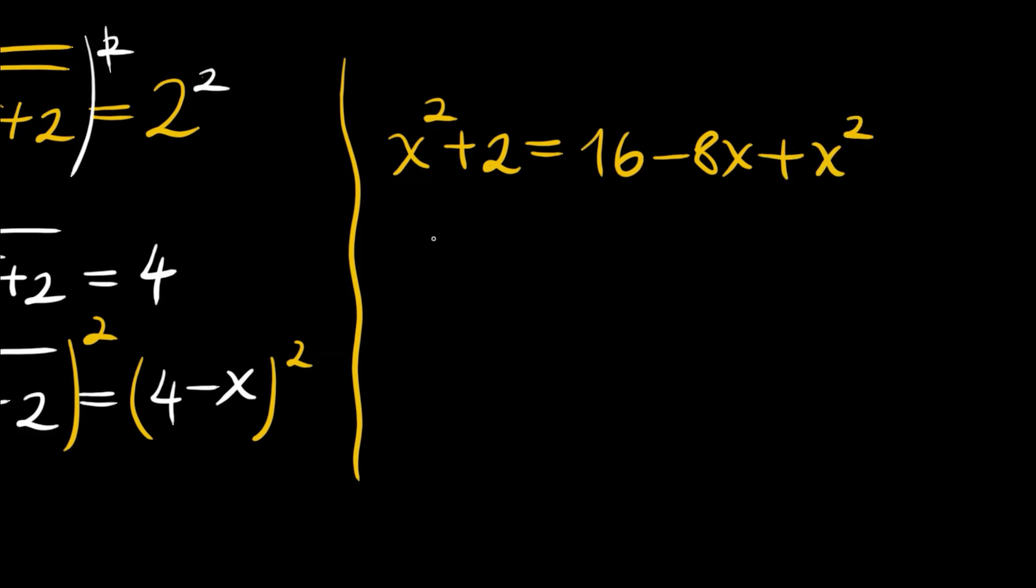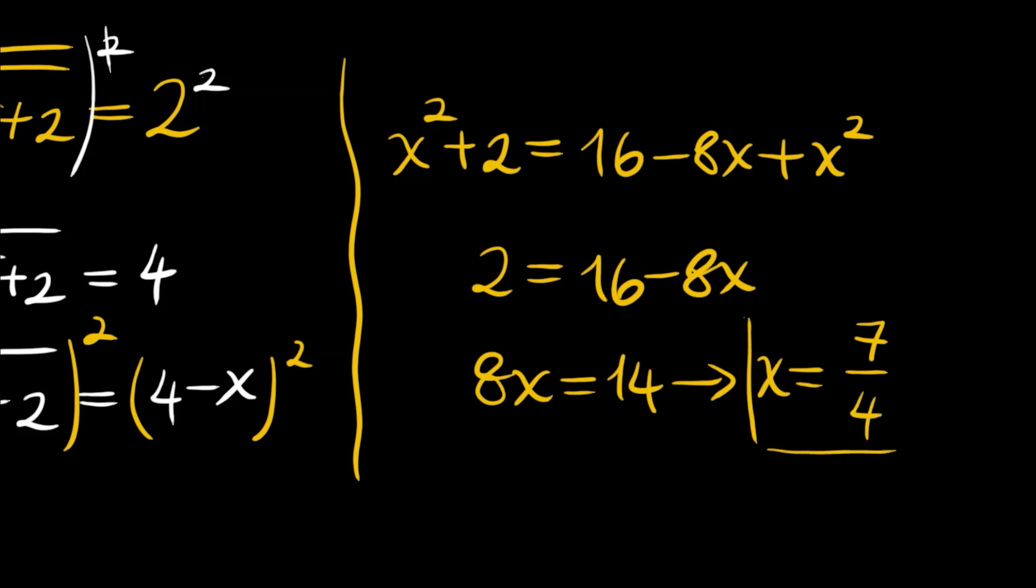So we can cancel these two x squareds. We will have 2 equals 16 minus 8x, so 8x becomes 14. x equals 7 over 4 if we cancel by 2.